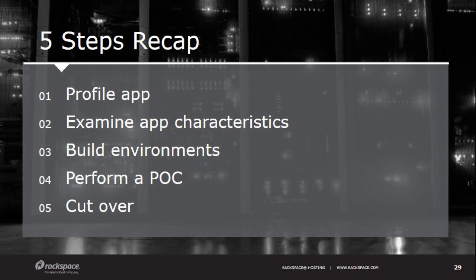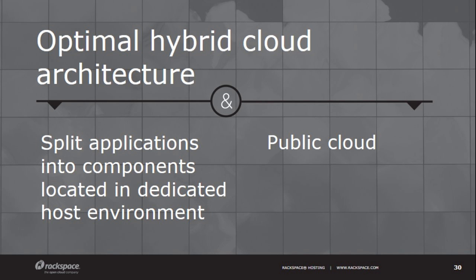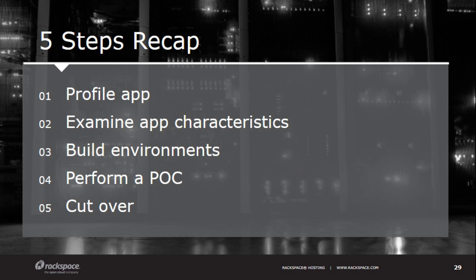To recap all these steps: we talked about profiling the application, examining application characteristics, looking for things that drive the decision to deploy certain components in a dedicated or single-tenant environment versus components ready for the cloud. Then you build out the environment — covering resource monitoring, sizing, and planning. Performing the proof of concept and load testing, and then ultimately cutting over the environment. Boiling that down into five steps may seem like an oversimplification — this is not an easy thing to do. But if you plan well and have the right partners engaged, it can be a successful process that helps you achieve your goals.